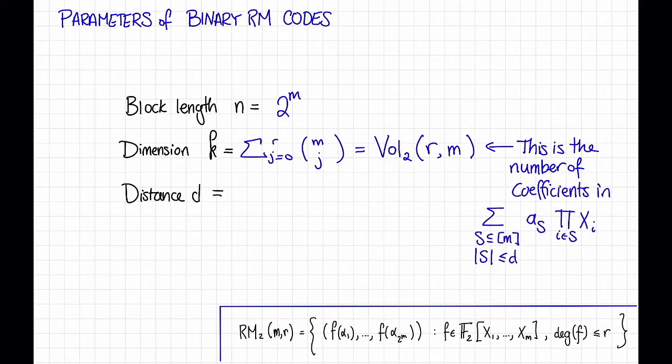That is, just like a Reed-Solomon code, one way to think about the encoding map of a Reed-Muller code is to choose the coefficients A sub S and then make this polynomial out of them and then evaluate this polynomial at all of the different evaluation points. So the message length or the dimension is just the number of possible coefficients we get to choose, and how many are those? That's the same as the number of subsets of the integers 1 through M that have size at most D. And that's what this sum is counting.